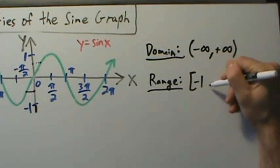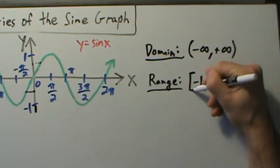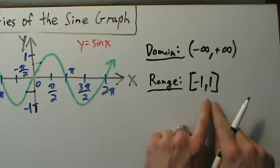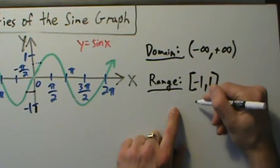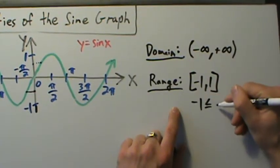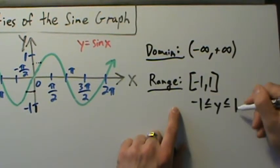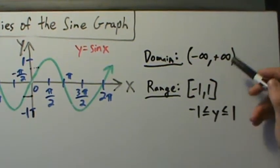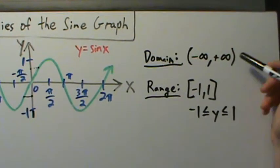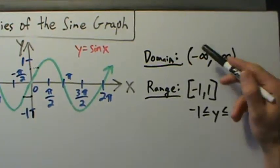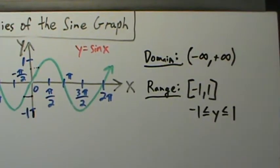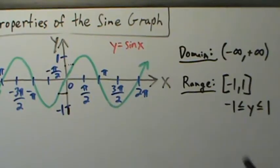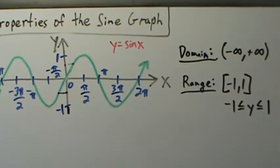In interval notation, the range is written with square brackets: negative one to positive one. That means negative one is less than or equal to y is less than or equal to one. Remember, never use square brackets on infinities — always use parentheses on infinities. So that's domain and range — definitely really important properties to keep in mind.